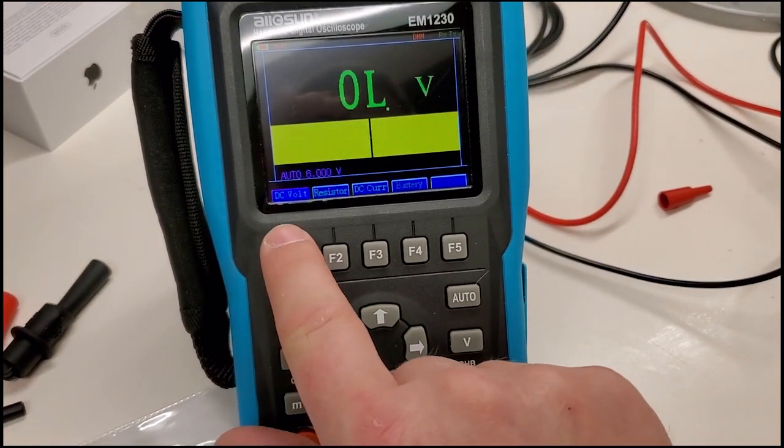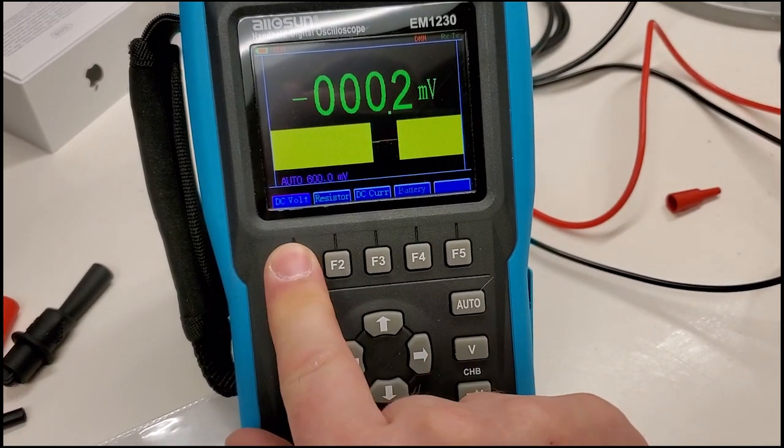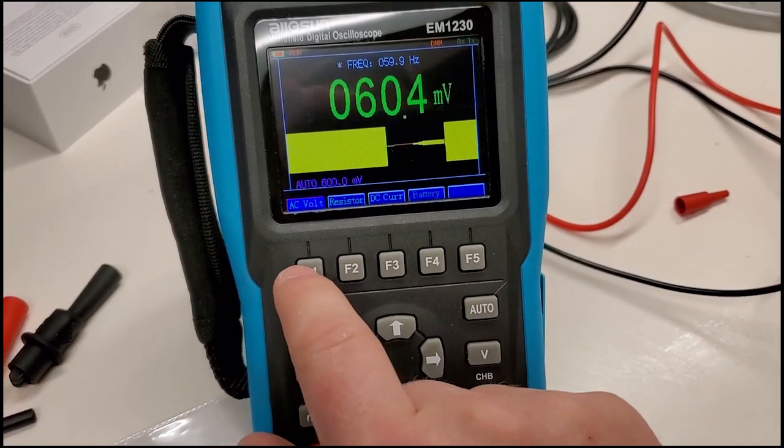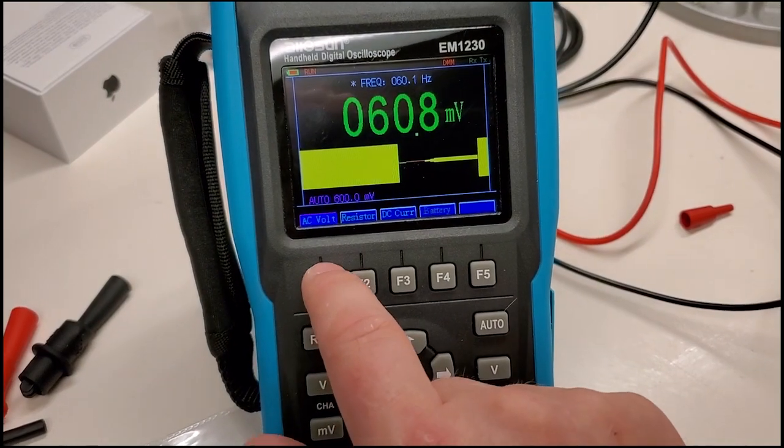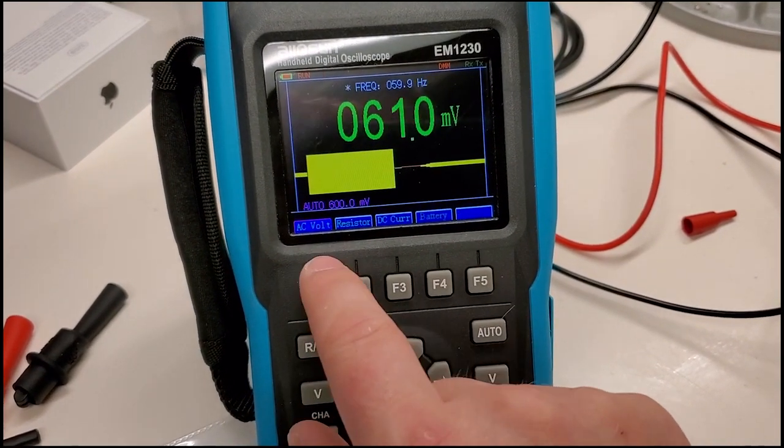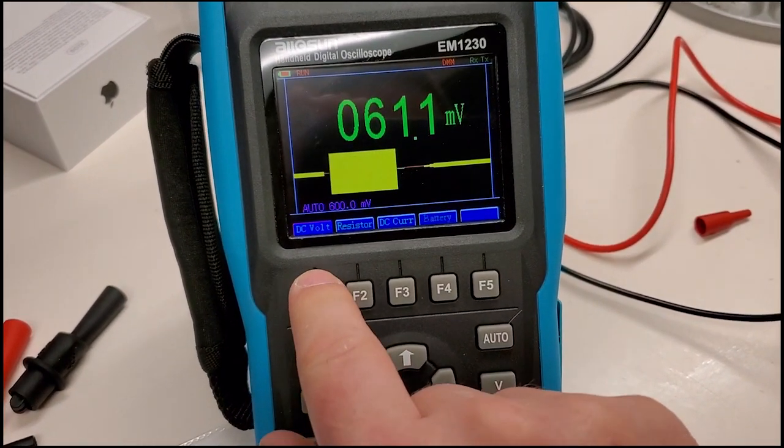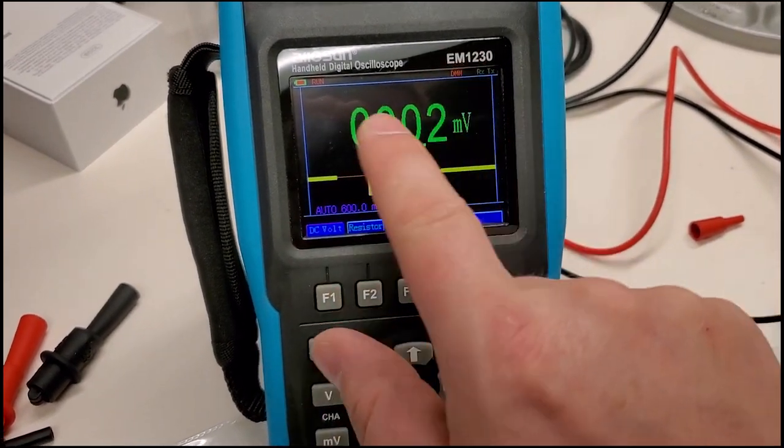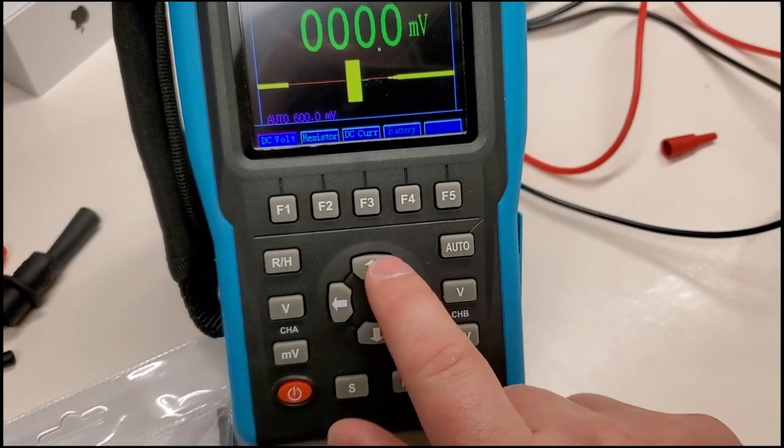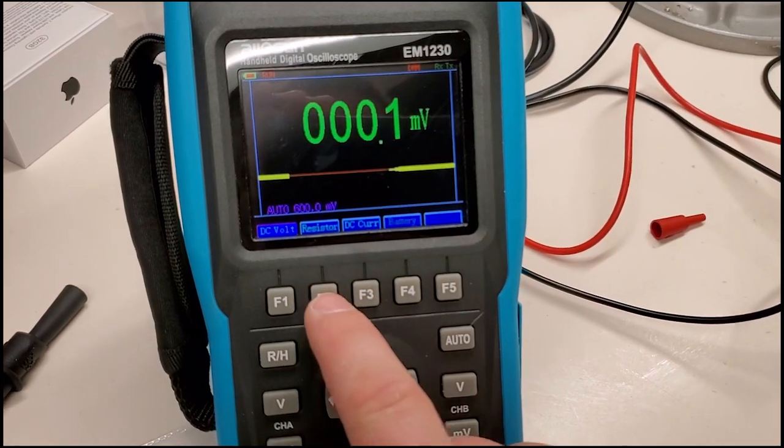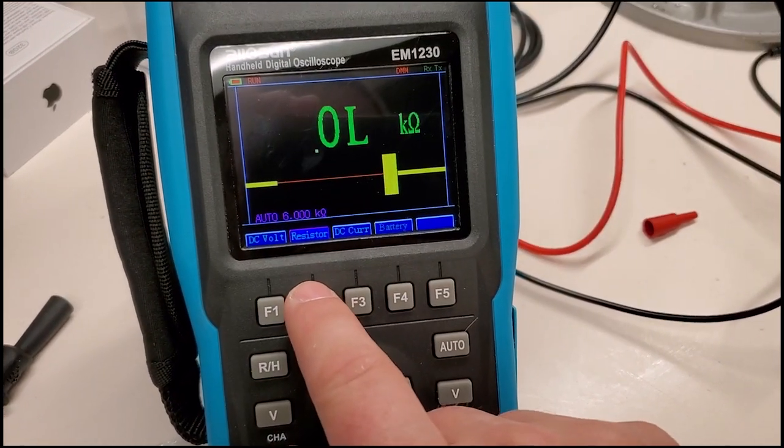You can see, I can change it between AC and DC. It's not very intuitive because you have to multi press the button in order to select other menu options. I would rather press the button, it takes me into a menu and then I use the arrow keys to select what option I want, but you do what you do, man.